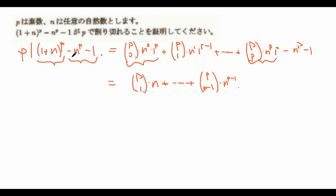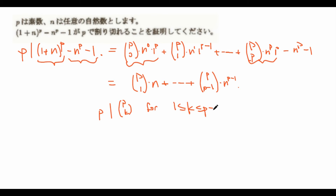Indeed, it suffices to show that p divides p choose k for k between 1 and p minus 1. Because if this is true, then p divides each of these coefficients, so obviously p would divide the whole sum for any n that we choose.